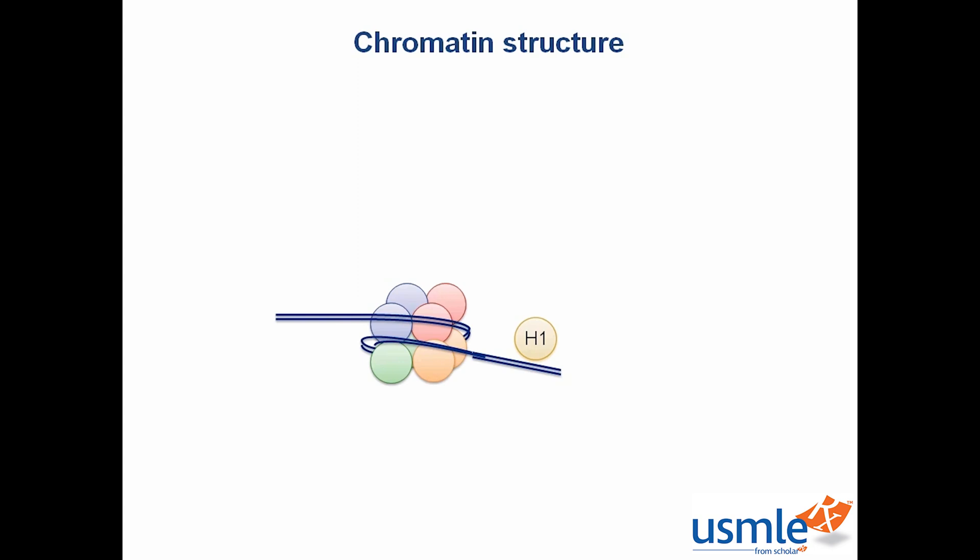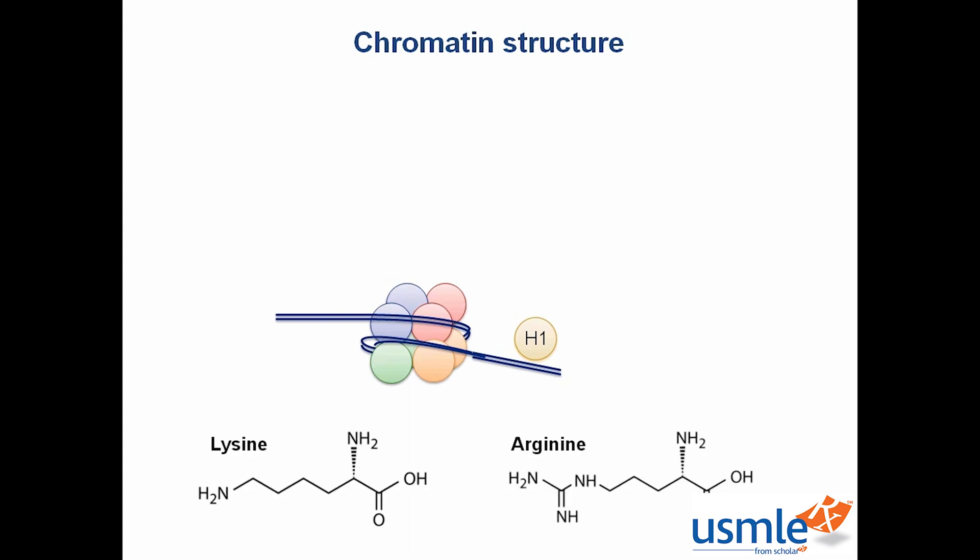So what causes DNA to wrap around histones? This is because the DNA is negatively charged, and histones are rich in the positively charged amino acids arginine and lysine. The lysines on histones are particularly important because gene transcription is often regulated by covalently adding or removing methyl or acetyl groups on these lysines, which changes their affinity for DNA.